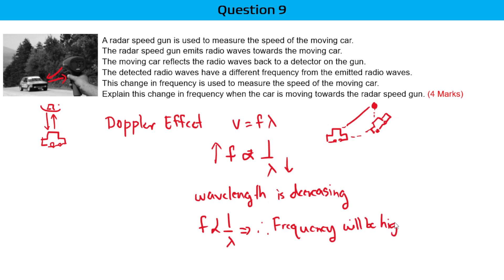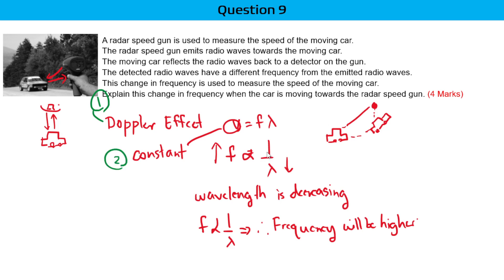You should also mention that velocity will be constant. By mentioning Doppler effect, you get one mark. By mentioning that V is constant, you get two marks. By writing down the relationship between frequency and wavelength, you get three marks. And by summarizing your answer, you'll get the final fourth mark.